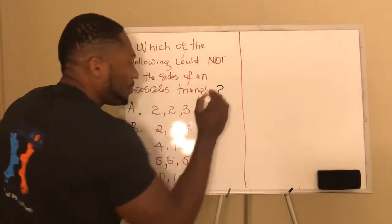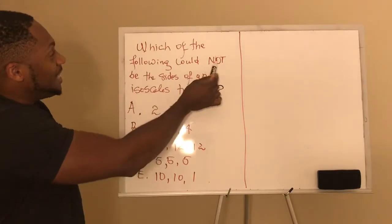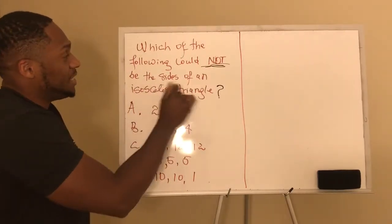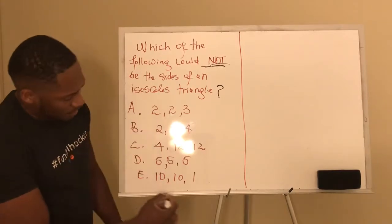All right, so this one says, which of the following could not be the size of an isosceles triangle? We have five answer choices here.